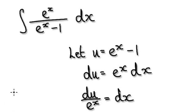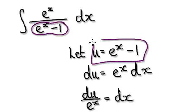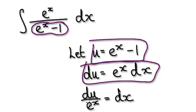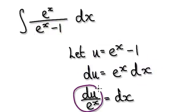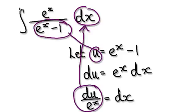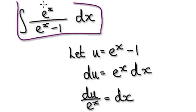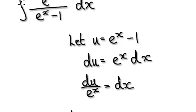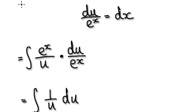So to do this, let u equal this thing here. So if u equals this thing here, then du equals this, then dx equals this. So now we can put this into the dx and then put the u into this thing here. So this whole thing here will become this.